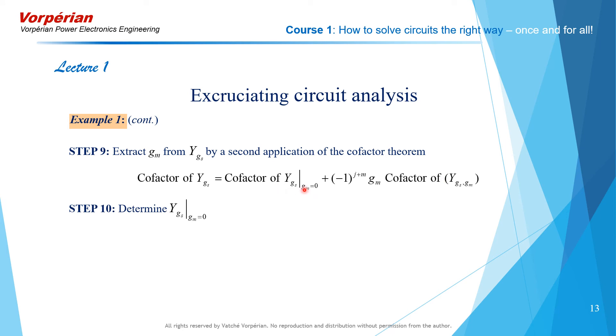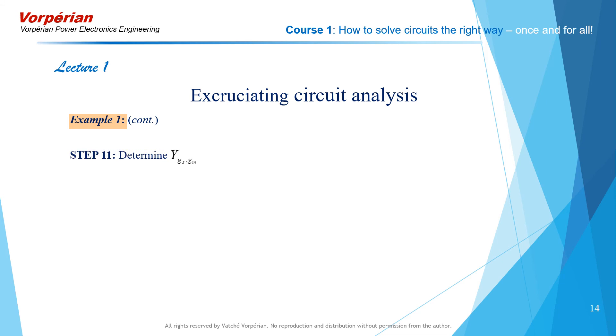The first term is given by the following matrix, and the second term is given by the following matrix, after we strike out the proper row and column, after performing the proper row and column additions that we discussed earlier.